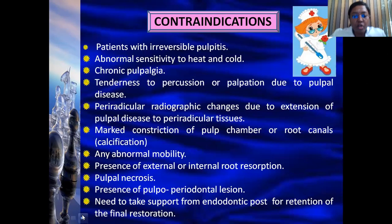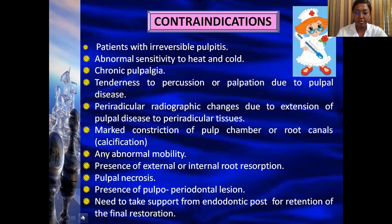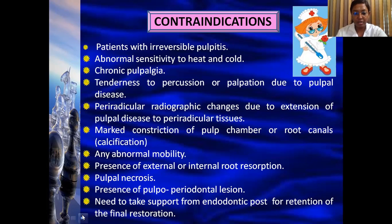Contraindications for pulpotomy include: irreversible pulpitis with abnormal sensitivity to heat and cold; pulpalgia; tenderness to percussion or palpation; radiographic periradicular changes due to extension of pulp disease; marked constriction or calcification in the pulp chamber or root canal; abnormal tooth mobility; external or internal root resorption; pulp necrosis; endo-perio lesion; and when an endodontic post is needed for the final restoration.